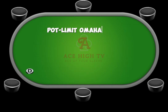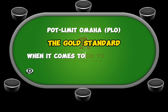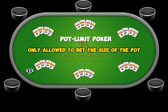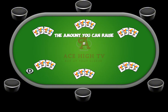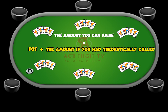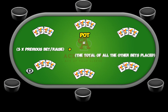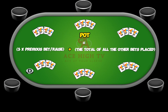Pot Limit Omaha, PLO, is the gold standard when it comes to four-card poker. Pot Limit Poker refers to poker games where you are only allowed to bet the size of the pot when the action is on you. The rules are somewhat simple: the amount you can raise is equal to what's in the pot, plus the amount if you had theoretically called. The pot is calculated as follows: three times the previous bet or raise, plus the total of all the other bets placed.